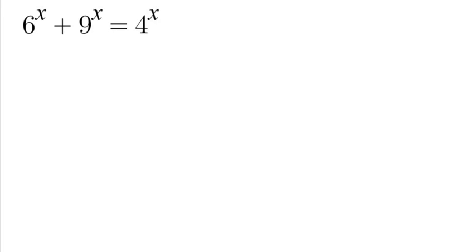The first step is we're going to divide the entire equation by 4 to the power of x. We're doing that so our 4 to the power of x can cancel out, and we're going to be left with a 1 value here.